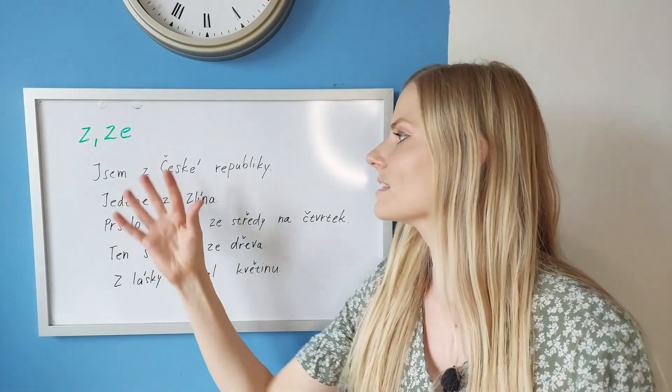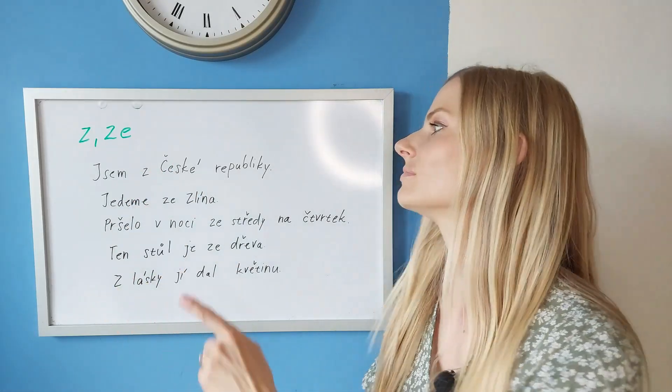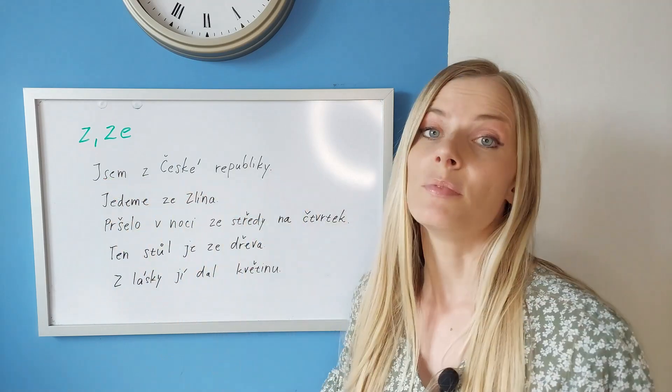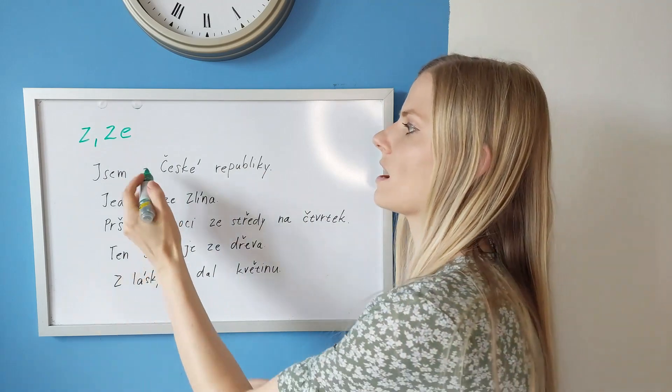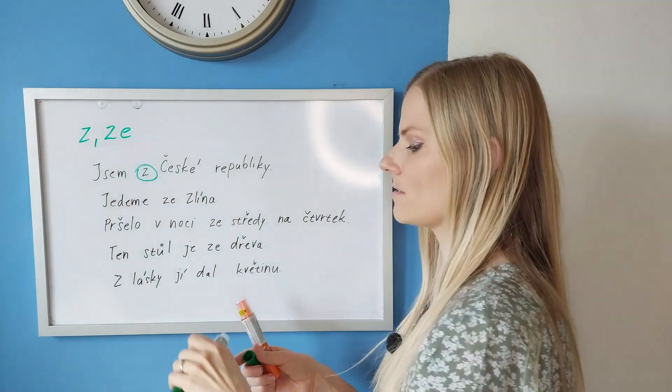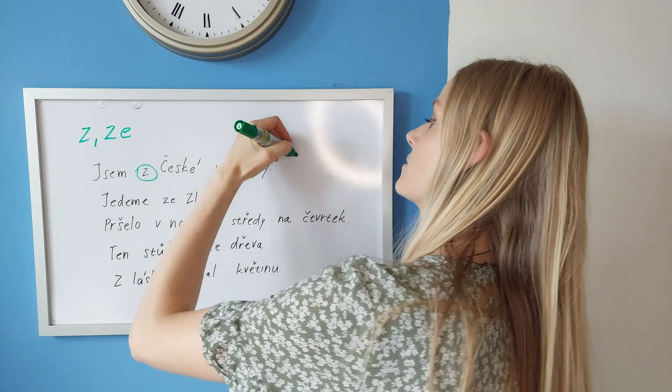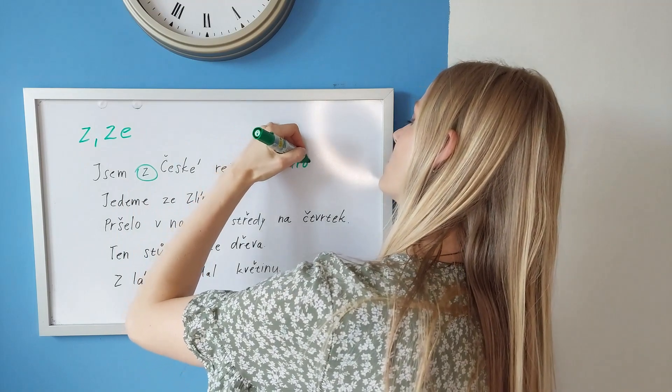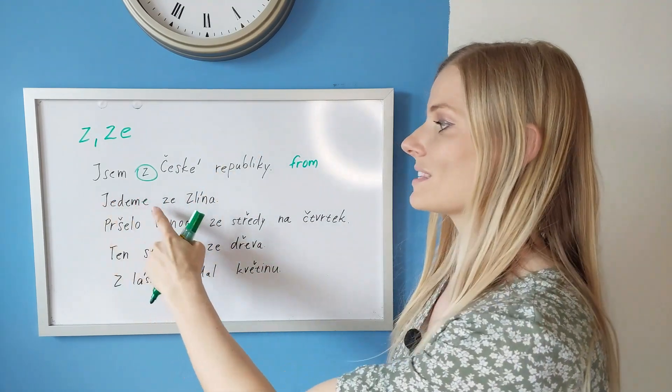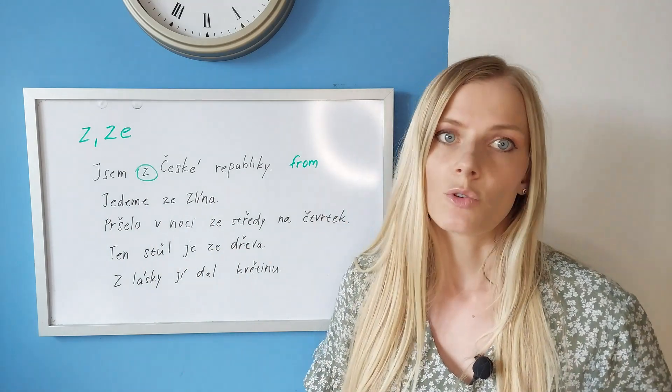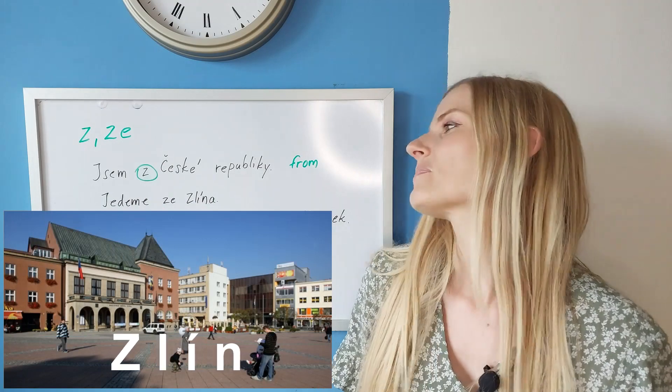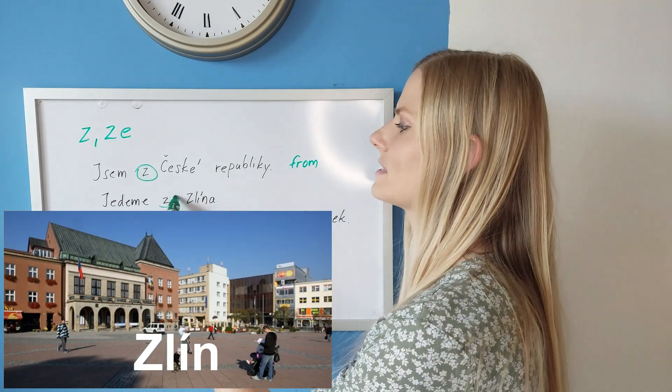Let's have a look at these examples that I wrote. Jsem z České republiky - I'm from the Czech Republic. Here we have the preposition Z. We could translate it as from. Jedeme ze Zlína - We are driving from the town of Zlín. There is a town called Zlín in the Czech Republic.